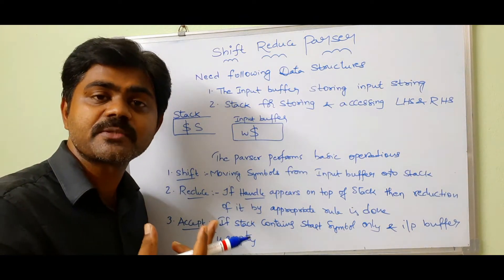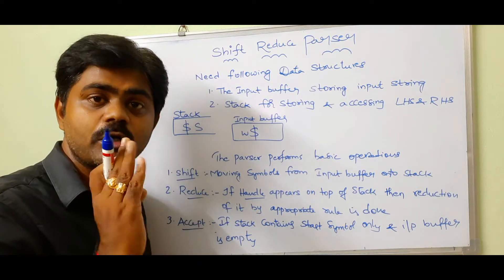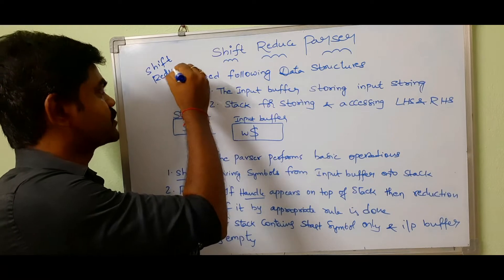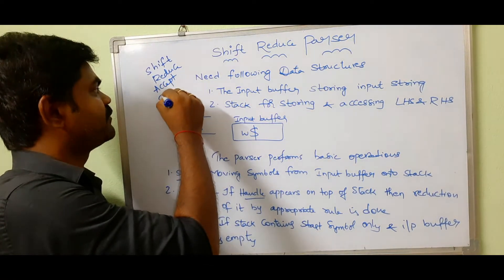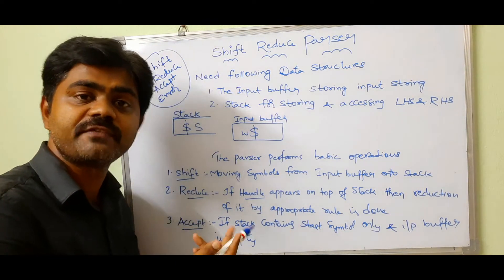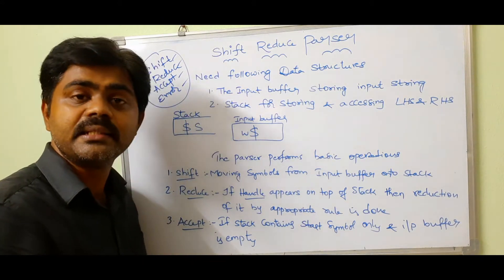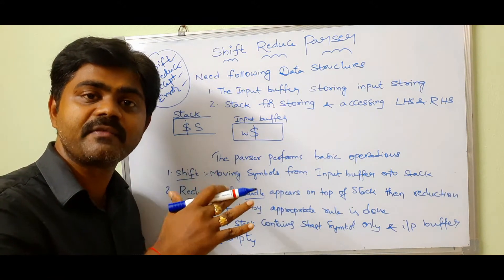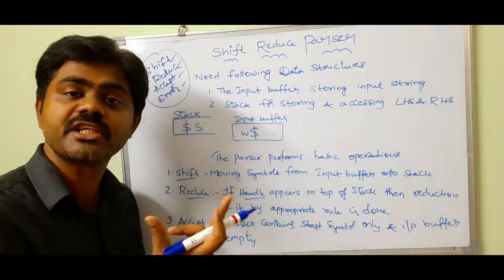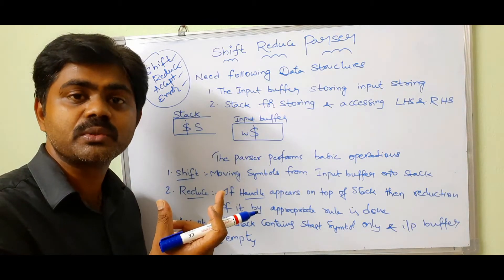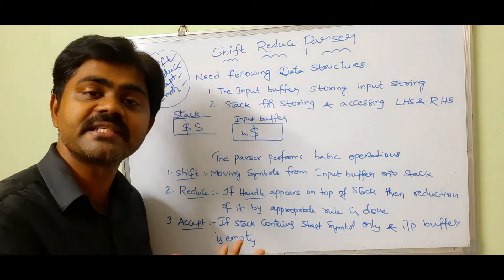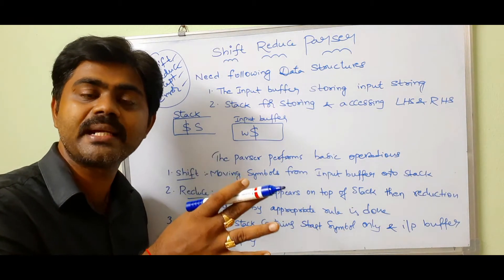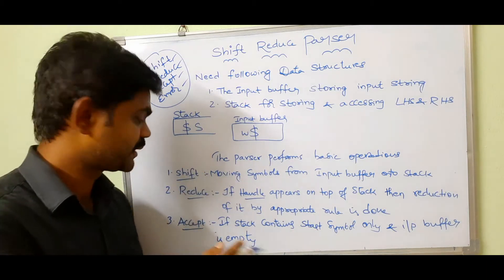The shift-reduce parser has four basic operations: shift, reduce, accept, and error. Shift means moving symbols from the input buffer onto the stack. Reduce: if a handle appears on the top of the stack, reduction of it by the appropriate production rule is performed.